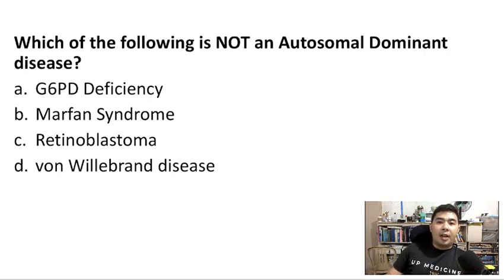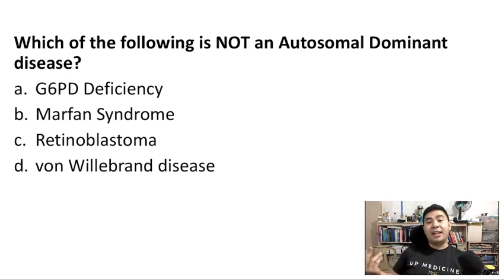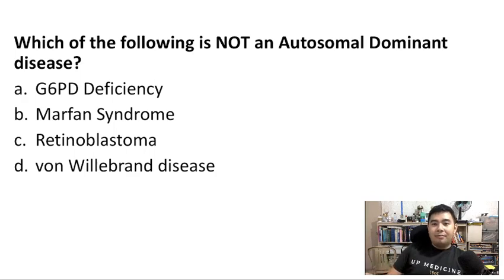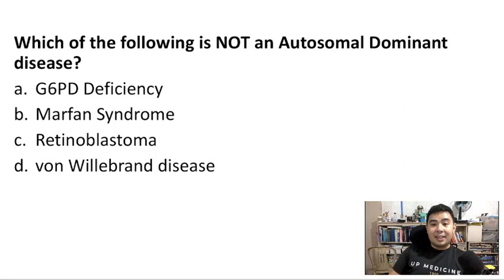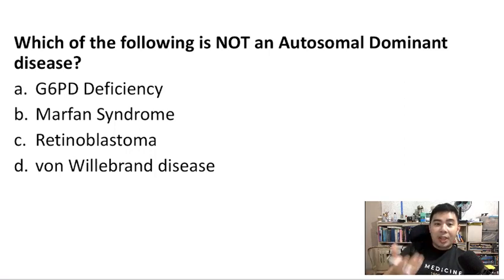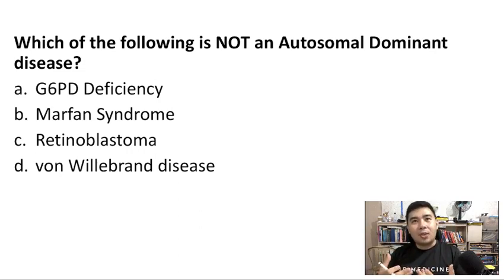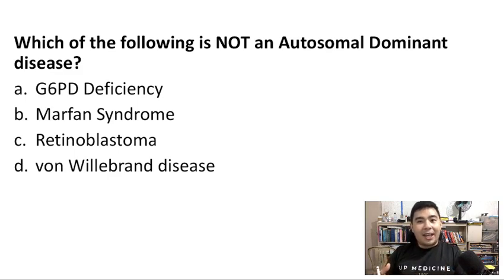Hi everyone, Jonathan Chan here. I am a recent medical graduate from the EP College of Medicine and I'm here to talk about a pearl on genetics — covering autosomal dominant, autosomal recessive, X-linked dominant, and X-linked recessive inherited diseases. This usually comes out in exams but it's one of those questions that are hard because it's difficult to consolidate and memorize all the diseases passed on via these mechanisms.